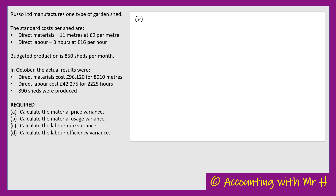On to part B: calculate the material usage variance. The formula is SP × (SQ − AQ), where SP is the standard price, SQ is the standard quantity, and AQ is the actual quantity — all figures about materials. I've already got two of these figures from part A: the standard price of £9 per metre and the actual quantity of 8,010 metres. The only figure I don't know is the standard quantity — how many metres of material did they expect to use.